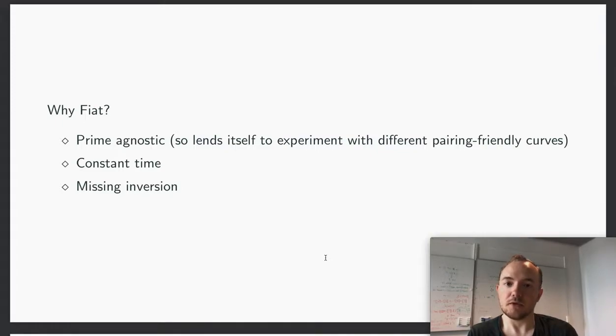So why did we choose to use Fiat as our tool? Fiat is prime agnostic and allows us to generate this algorithm for any prime. In particular, you need very different primes for classical elliptic curve cryptography and pairing-based elliptic curve cryptography. Furthermore, Fiat generates constant time code, which is essential for security. At the moment it did not support inversion, so this work is an extension of what Fiat supports.